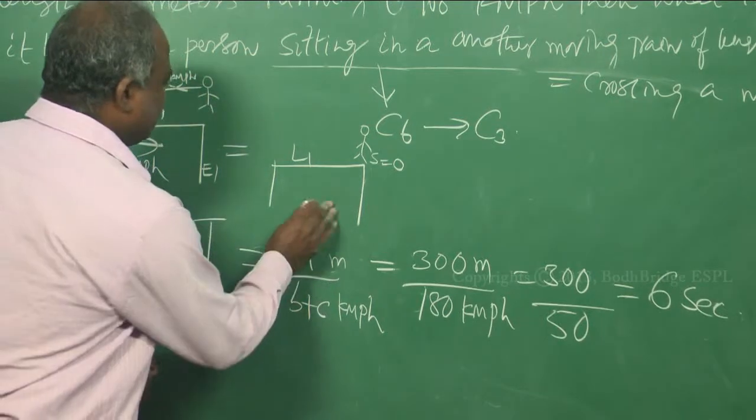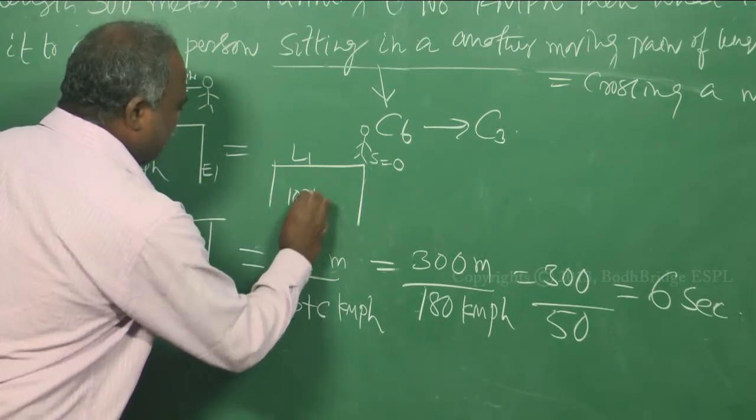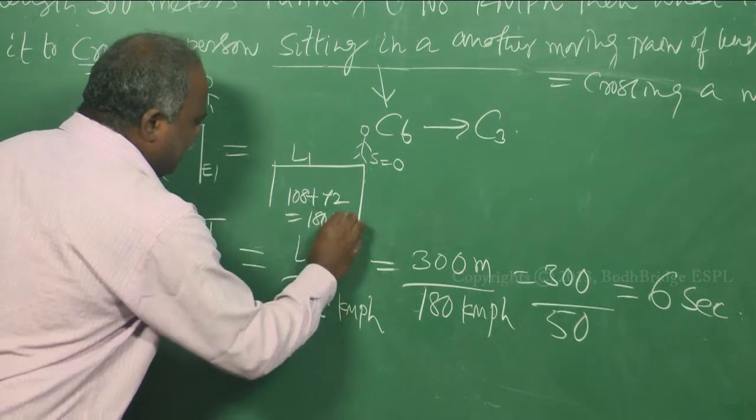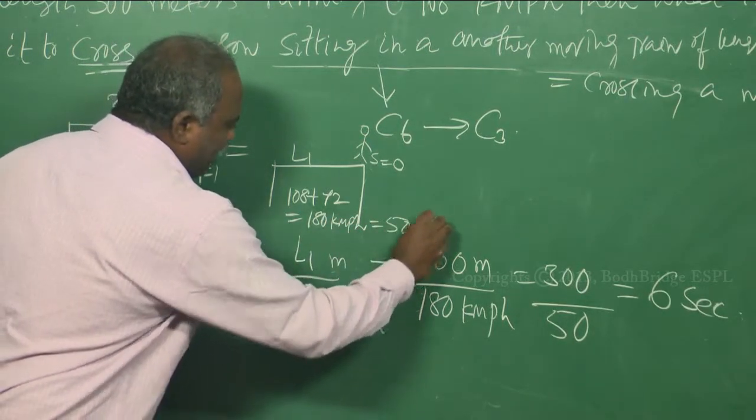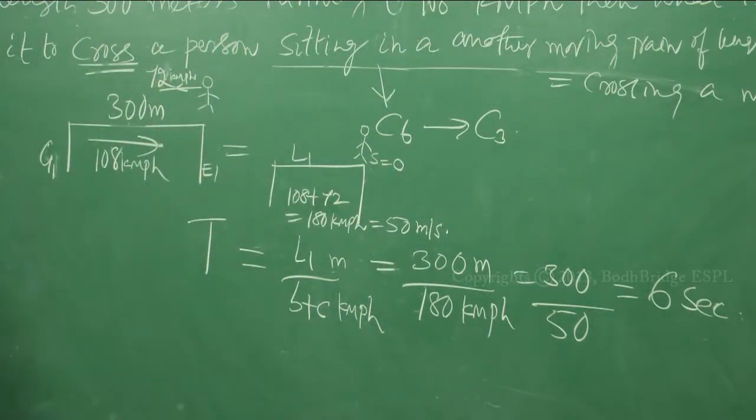b plus c is nothing but 108 plus 72, that is 180 kmph, which is nothing but 50 meters per second. 50 meters per second.